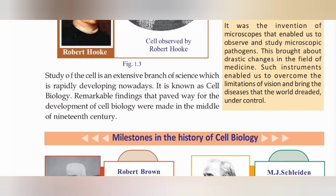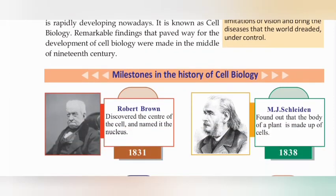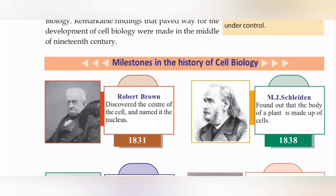Remarkable findings that paved the way for the development of cell biology were made in the middle of the 19th century. First, Robert Hooke observed cells. The second important scientist is Robert Brown.